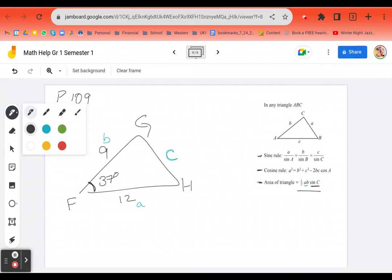So let's just now plug in our formula. We have one half times A, which is 12, times B, which is 9, times the sine of C.